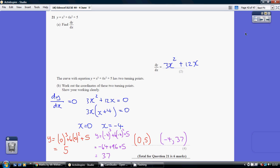Question 21. To differentiate, you multiply by the current power and reduce the power by 1. So with this first term, multiply by the 3, giving us 3x, and reduce the power by 1, so 3x squared.